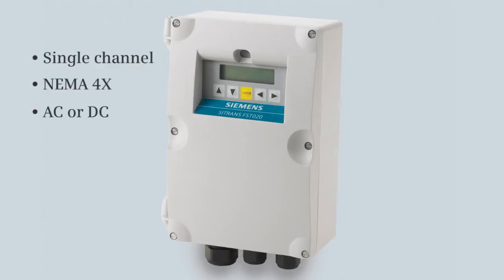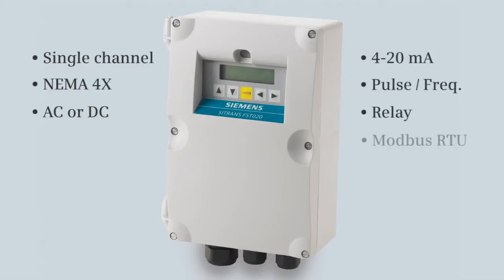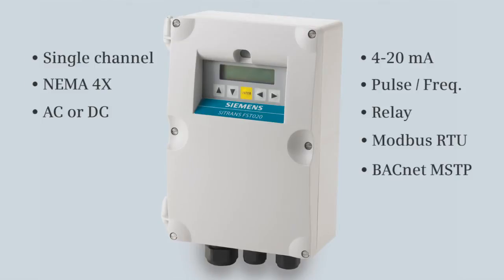The FSTO20 outputs include 4-20 milliamp, pulse, relay, Modbus RTU, and BACnet MSTP communication, which is used in building automation and control networks for HVAC applications such as heating and cooling.